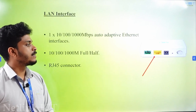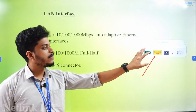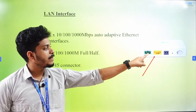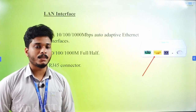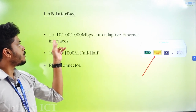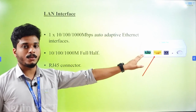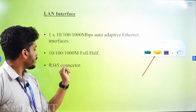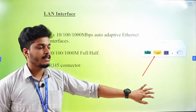Then we have the LAN interface. We use Cat5 and Cat6 cable. The Ethernet port is 1x1000 Mbps Auto Adaptive Ethernet interface — 10/100/1000 Mbps Auto Adaptive Ethernet. RJ45 is connected using Cat5 and Cat6 cables.